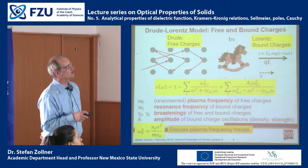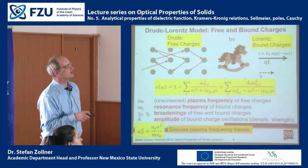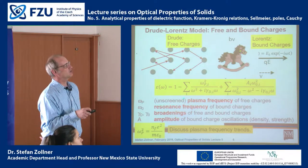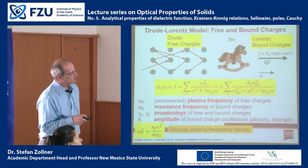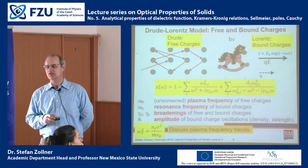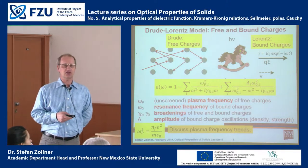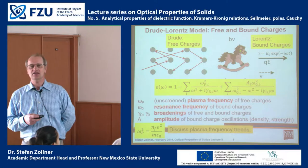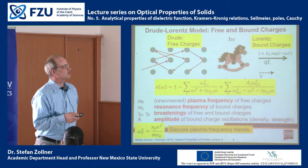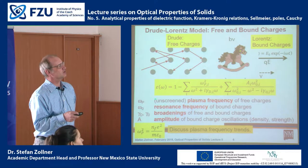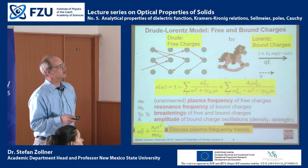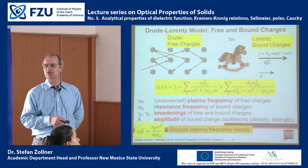We have a plasma frequency for the free charges, sometimes called the unscreened plasma frequency. There is also a screened plasma frequency with a screening constant epsilon in the denominator. If you use commercial software to model your spectra, it is very important to understand whether the plasma frequency in your model is the screened or unscreened version.